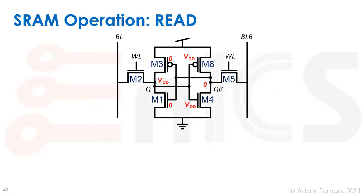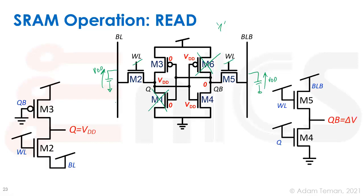Moving to the read operation — we're storing a 1 in the cell, same propagation of internal voltages as before. For read, we pre-charge the bit line and bit line bar up to VDD and then turn on the word lines. We can erase the shut-off transistors — M6 is off and M1 is off — and redraw the equivalent schematic. Looking at M3, its gate is connected to QB which equals 0, so M3 is grounded at the beginning of the operation.